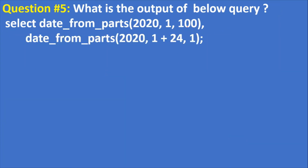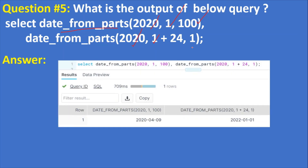The next question: what is the output of the below query — SELECT DATE_FROM_PARTS(year, month, days) and the same function with year, month+24, and 1? The answer: DATE_FROM_PARTS(2021, 1, 100) results in 2021-04-09, because adding 100 days to January gives April 9th. DATE_FROM_PARTS(2022, month+24, 1) adds 24 months — exactly 2 years — so 2022 becomes 2024.